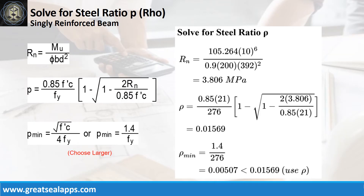Given maximum moment equals 105.264 kN·m, resistance factor equals 0.9, b equals 200 mm, and d equals 392 mm, the beam design ratio RN equals 3.806 MPa, and reinforcement ratio ρ equals 0.01569.